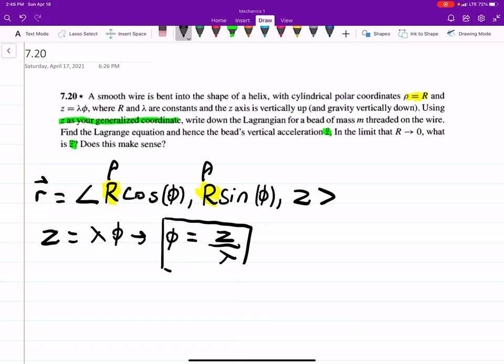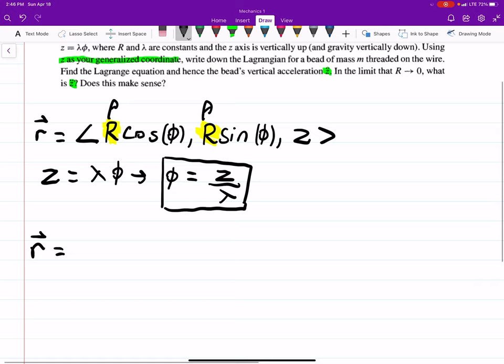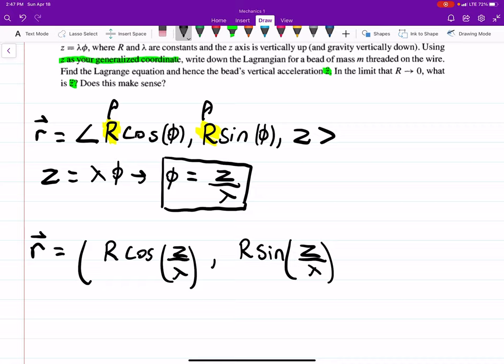Substituting that in, our position vector r is now capital R cosine of phi, which we know is z over lambda. I'll just write it in vector notation: R sine z over lambda and then z. So this is your position.